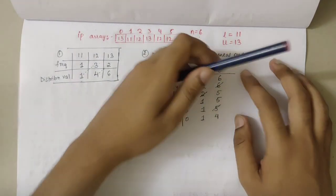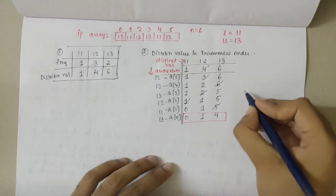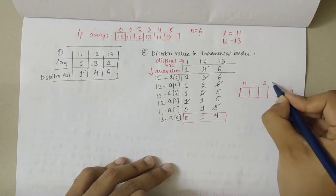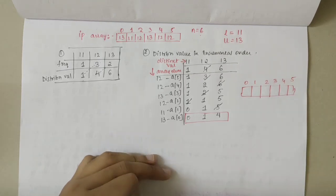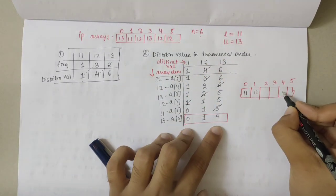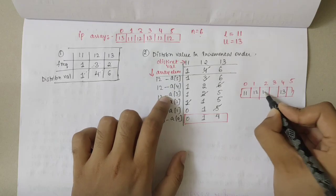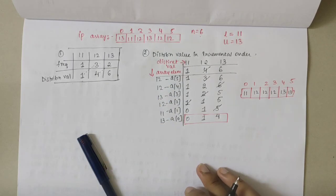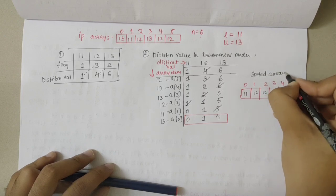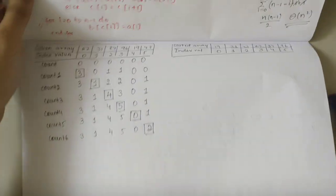The final distribution values are 0, 1, 4, which tell us the sorted positions. Constructing the sorted array S with index values 0 through 5: 11 is at position 0, 12 is at positions 1, 2, and 3, and 13 is at positions 4 and 5. This gives us the sorted array S: [11, 12, 12, 12, 13, 13]. This concludes the concepts of distribution count sort and comparison count sort.